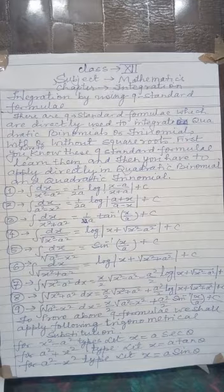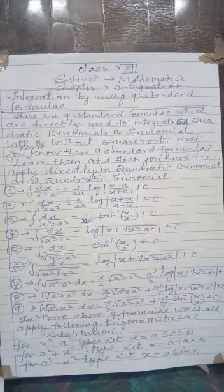Ninth formula: integration of under root (a square minus x square) into dx is equal to x upon 2 times under root (a square minus x square), plus a square by 2 times sine inverse of x upon a, plus c.